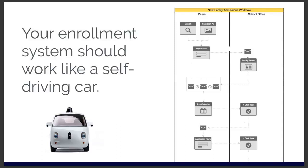Let's say they come in for the tour and you want them to fill out the application form. The system sends them the digital application form. If a week goes by and they haven't filled it out, the system sends you a notification: 'Susan came in for a tour, approved for the application form, hasn't filled it out yet — give her a call.' The system not only shows you exactly where every parent is in your process, but it also reminds you when you need to take action, so no one falls through the cracks no matter how busy you get.